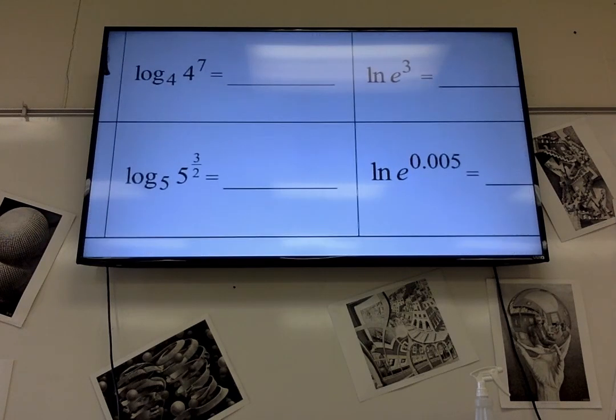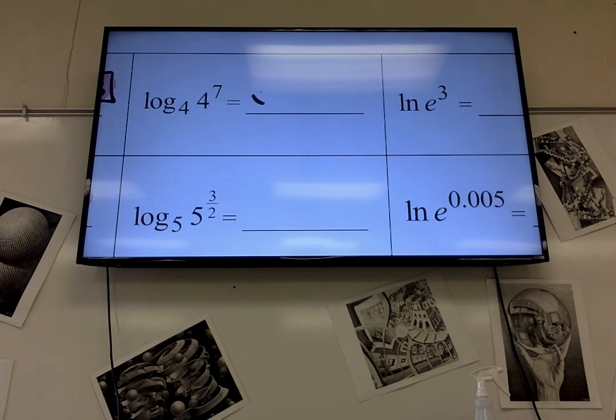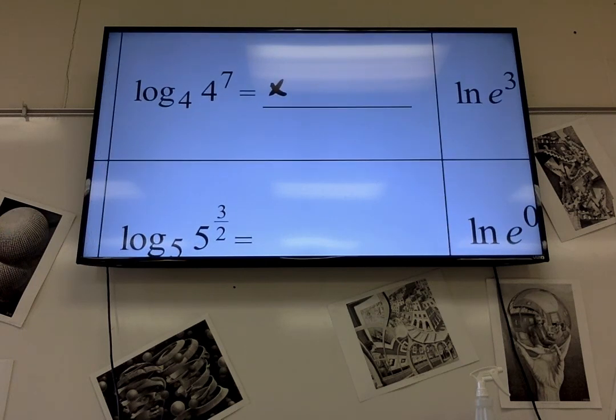These are logs. So if I set these equal to x, since they're a log, I can rewrite them as an exponential. So this is 4 to the x equals the middle part, which is 4 to the 7. So what's x equal to? 7.